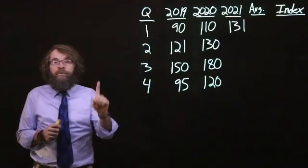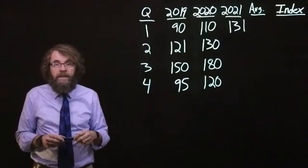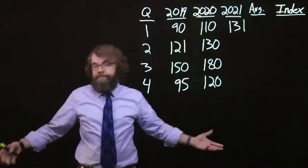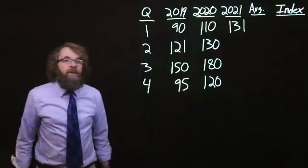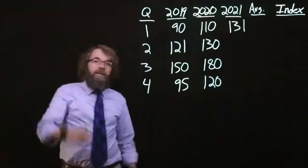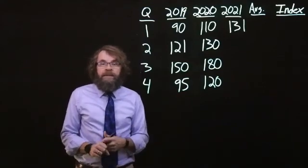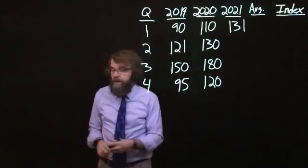We need to figure out what the overall average for that particular period is. And then we need to find the overall average. And then we will divide the average for each period by the overall average, and that will give us our seasonal indexes for a particular period.